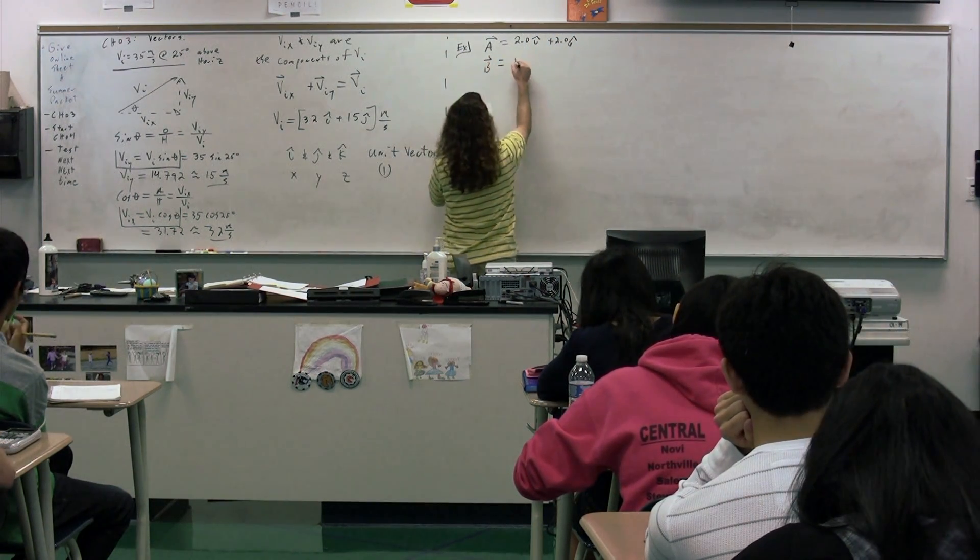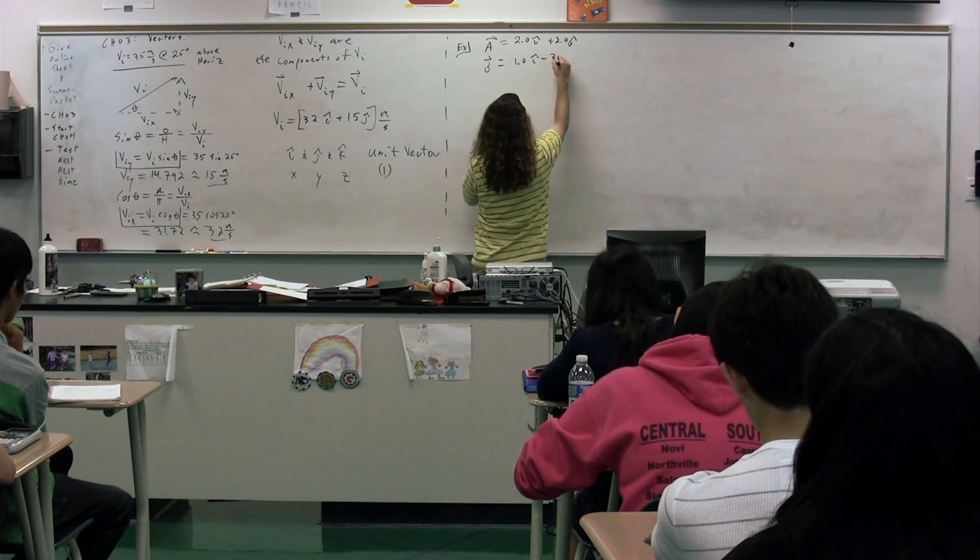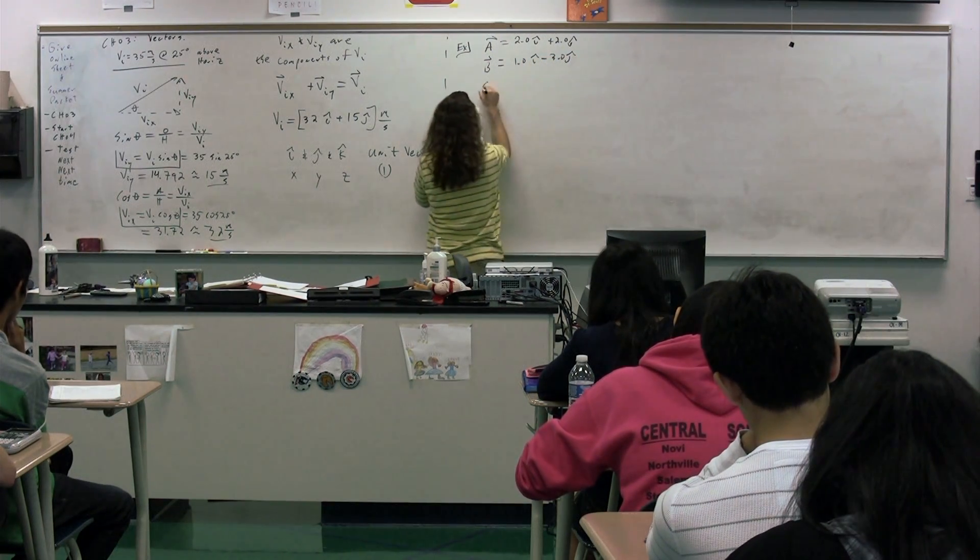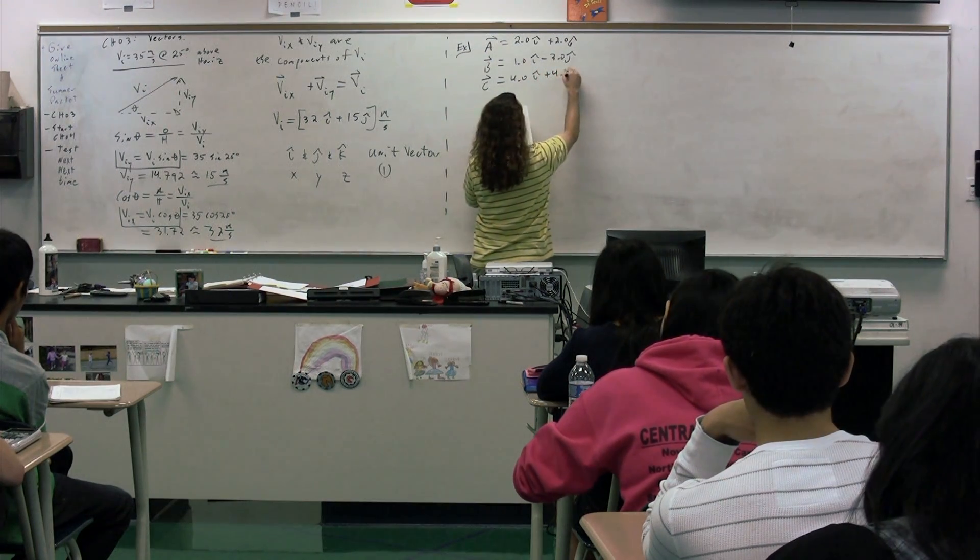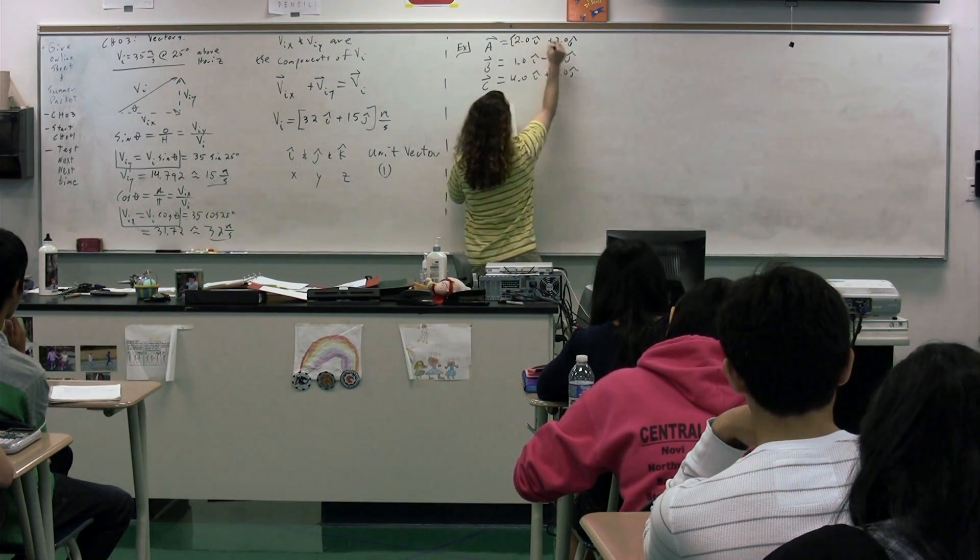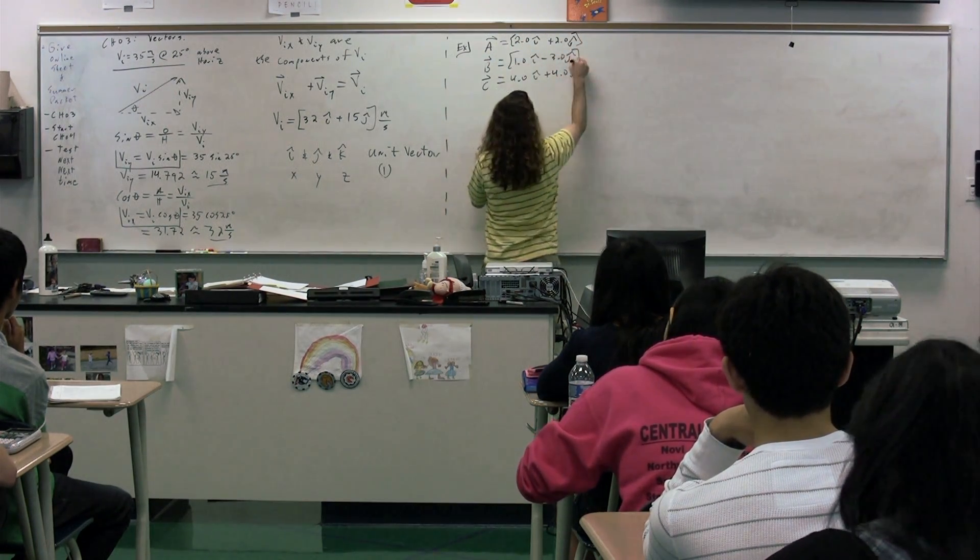Vector B, which equals 1.0i minus 3.0j, and vector C, which equals 4.0i plus 4.0j. And let's put these all in meters.